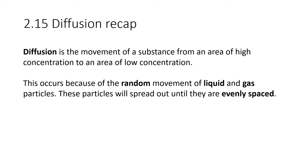To understand the content in this video we really need to be sure about how diffusion works, so here's a brief recap. Diffusion is the movement of a substance from an area of high concentration to an area of low concentration — we call that going down a concentration gradient. This process occurs because of the random movement of particles in liquids and gases. They move randomly, though the net movement is from high concentration to low concentration until they're evenly spaced.